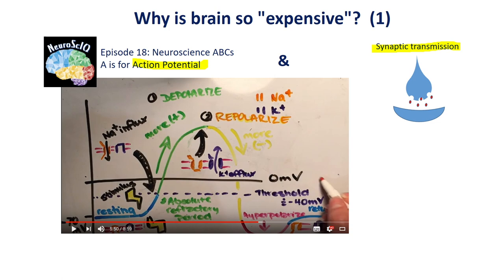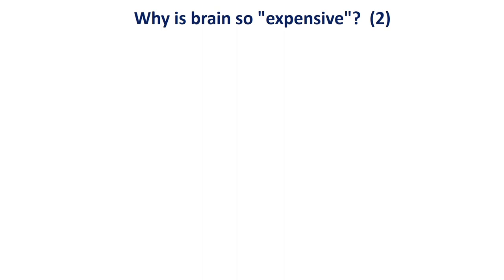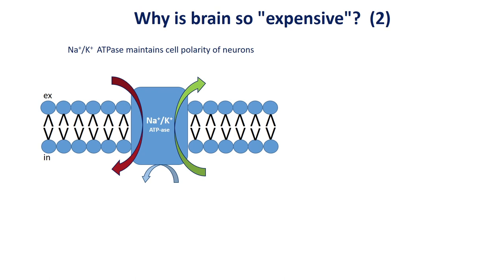That's nice, but who will clean it up and who will pay for it? If you look into a neuroscience textbook, you will find that a membrane protein called sodium-potassium ATPase maintains cell polarity of neurons. In other words, that's the one that will move the sodium ions outside and the potassium ions inside the cell. But as we can see, it is not free — to get two potassium ions into the cell while getting rid of three sodium ions, we have to pay with one ATP molecule.